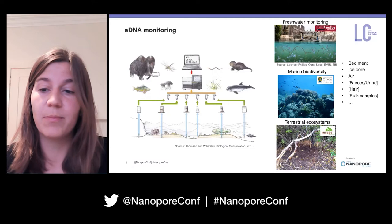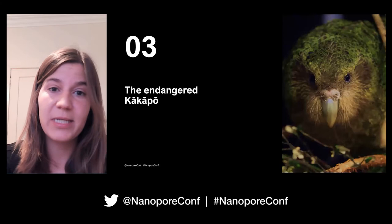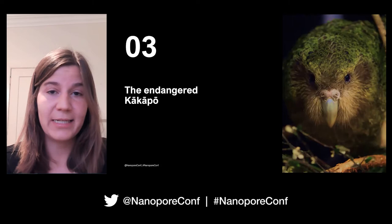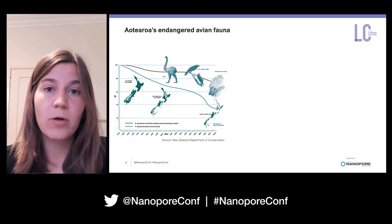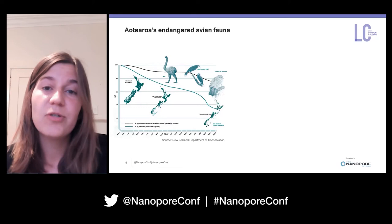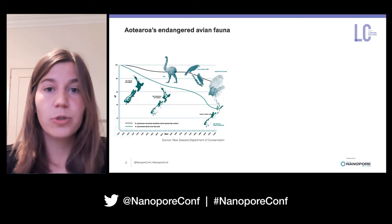The kakapo is a flightless and nocturnal parrot endemic to New Zealand. Flightless bird species in New Zealand have suffered greatly from the arrival of human settlers, mainly because of habitat loss but also from the introduction of mammalian predators not previously present. This led to the extinction of certain species such as the moa and the huia, and the kakapo was pushed to the brink of extinction with fewer than 100 individuals left.